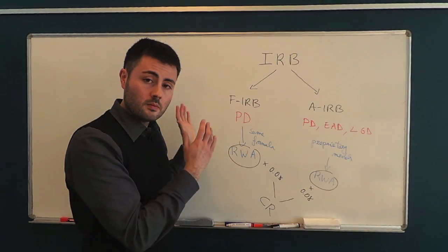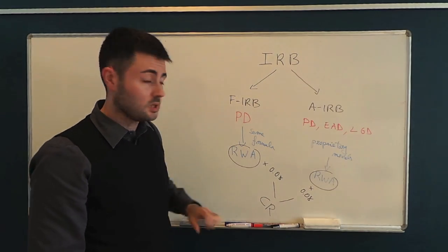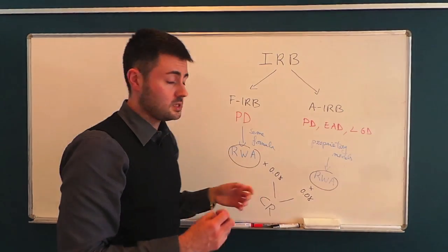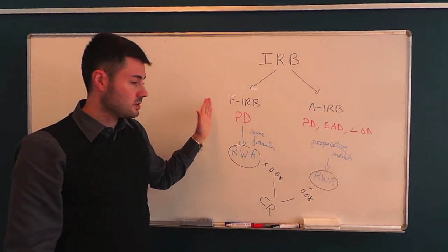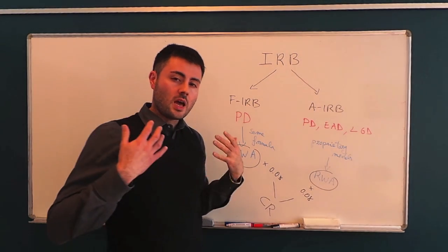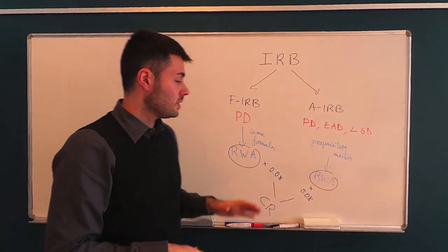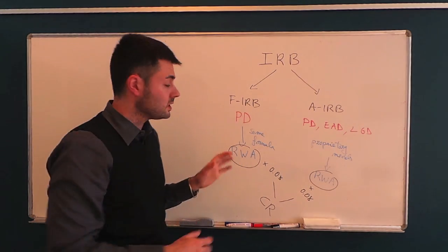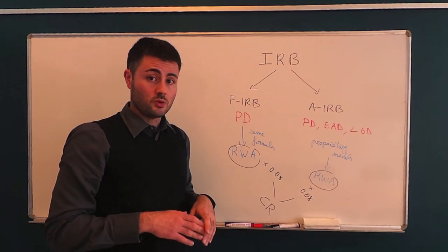Now, banks have the possibility of choosing between the foundation and the advanced approach within the IRB class. Typically, banks choose this approach if they don't have very complex research units. Because under this approach, they simply have to compute the probability of default, and then all the formulas are provided by the regulator.